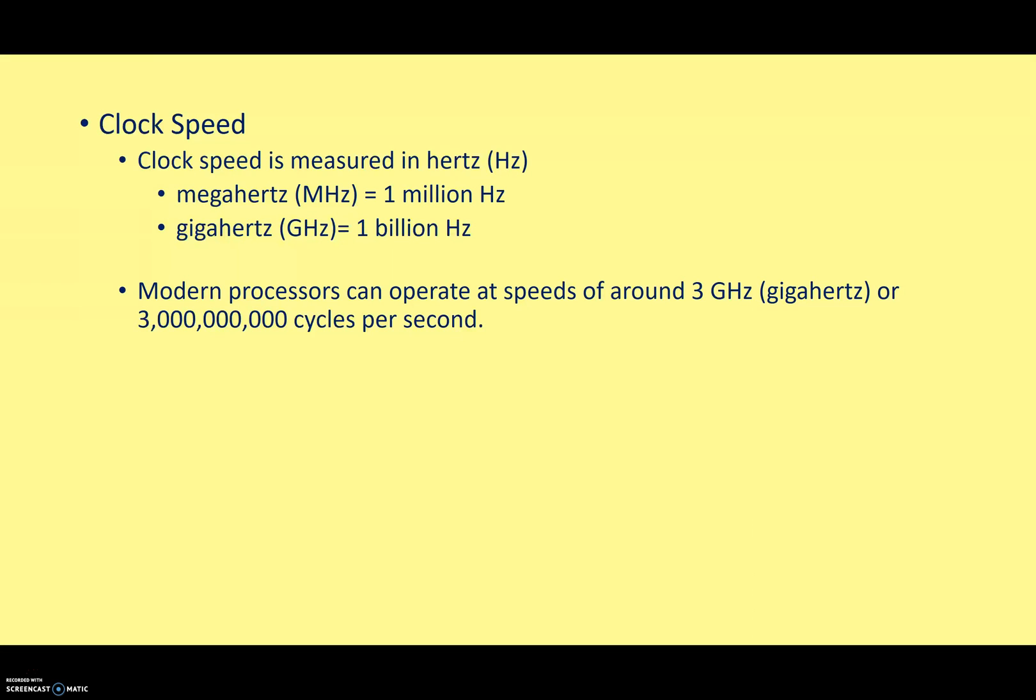We measure this clock speed in hertz, or cycles per second. One million cycles is called one million hertz, and one million hertz is called a megahertz.